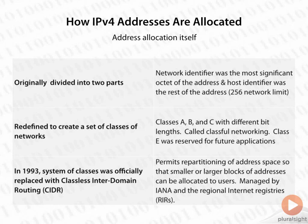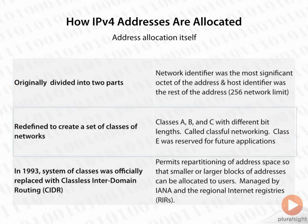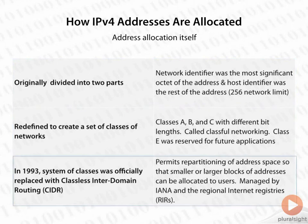CIDR lets us repartition the address space to create either smaller or larger blocks of addresses. We can borrow from the host portion to create more network addresses, and on each of those networks we can have a smaller set of host addresses, which extends the usability of the address space. So in summary: originally divided into two parts, redefined to create classes, and finally in 1993 the classes were replaced with CIDR.